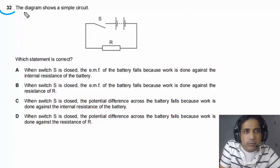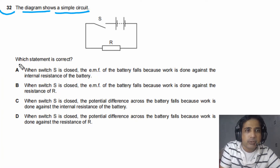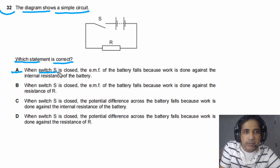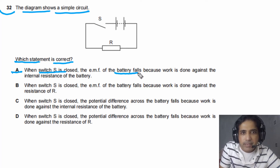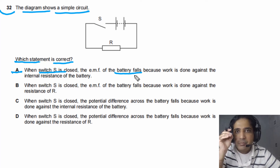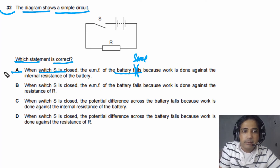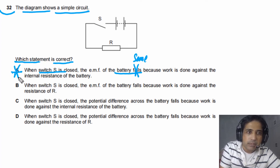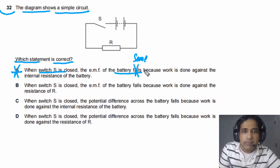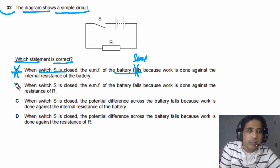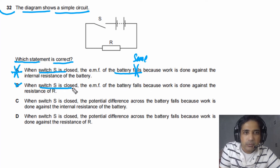For question 32, a simple circuit is given and we need to find which statement is correct. Statement A says when the switch is closed, the EMF of the battery falls — this is wrong. Statement B also says when the switch is closed, the EMF of the battery falls — this is also incorrect. The EMF of the battery remains the same whether the switch is open or closed.